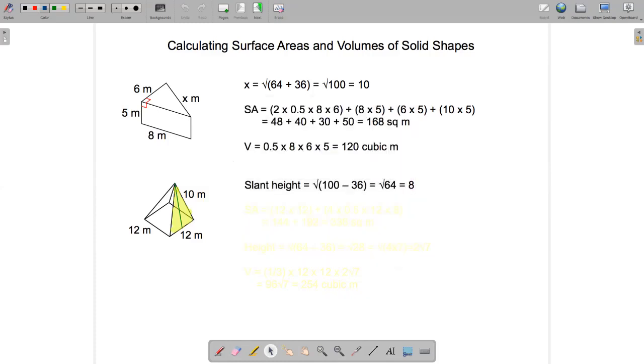Now that we have the slant height we can figure out the area of each of the triangles. They're identical. Each triangle has a base of 12 and a slant height of 8. So each triangle has a surface area of half times 12 times 8, and then the base is 12 times 12.